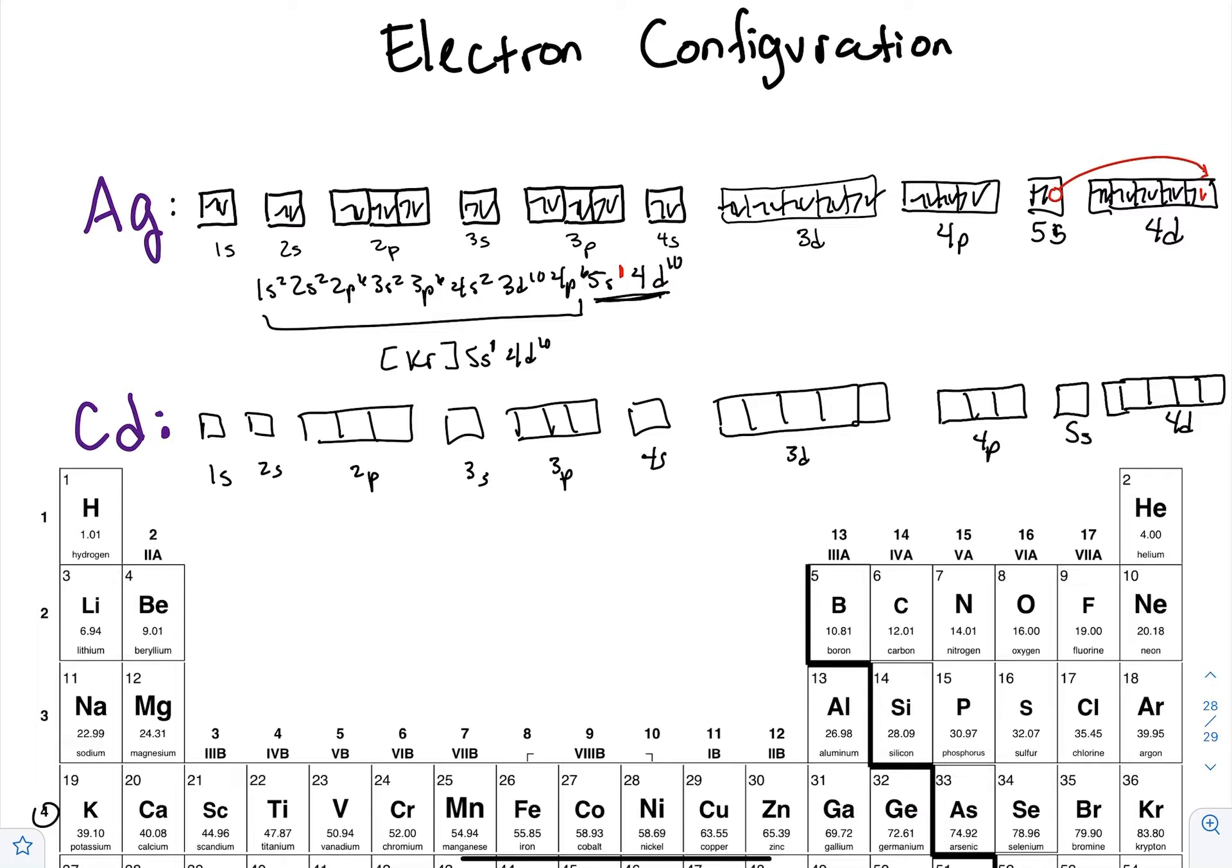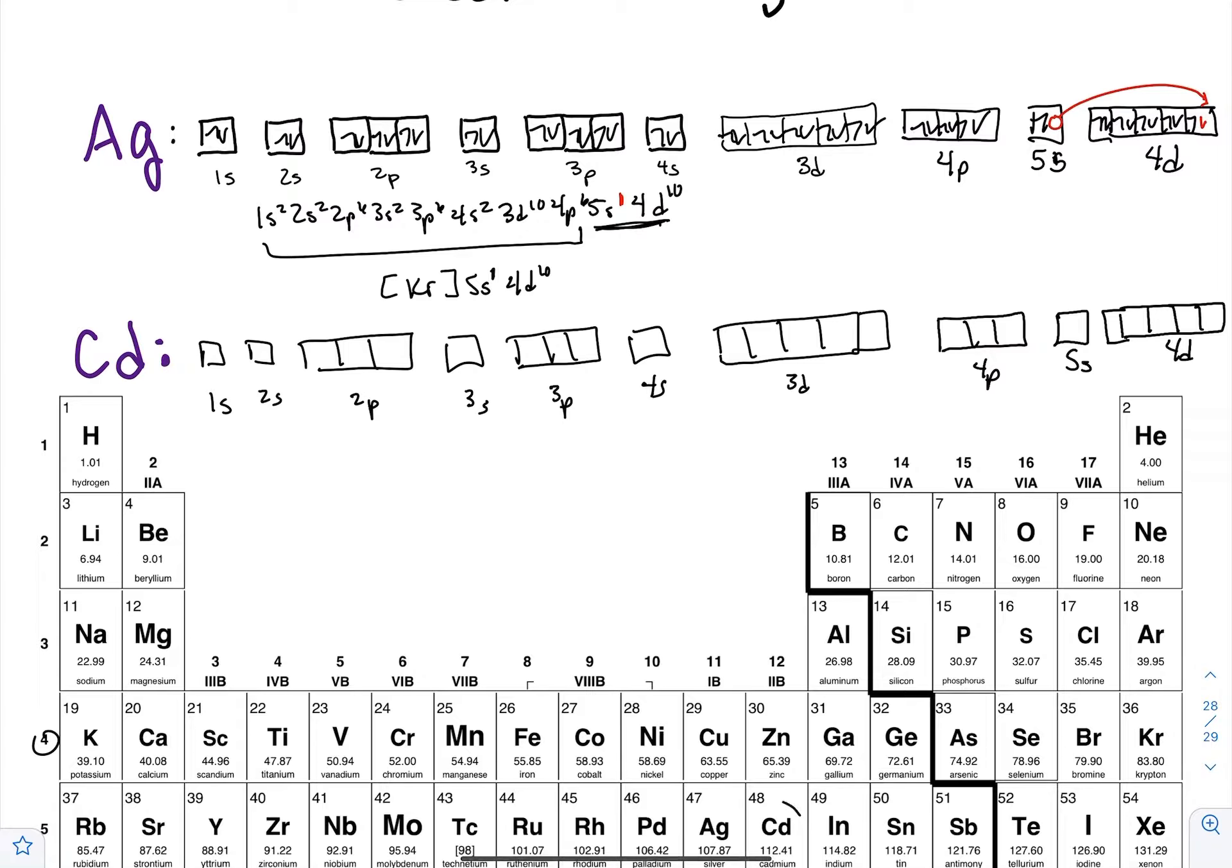So how does the electron configuration for cadmium differ? It's just right here besides silver.